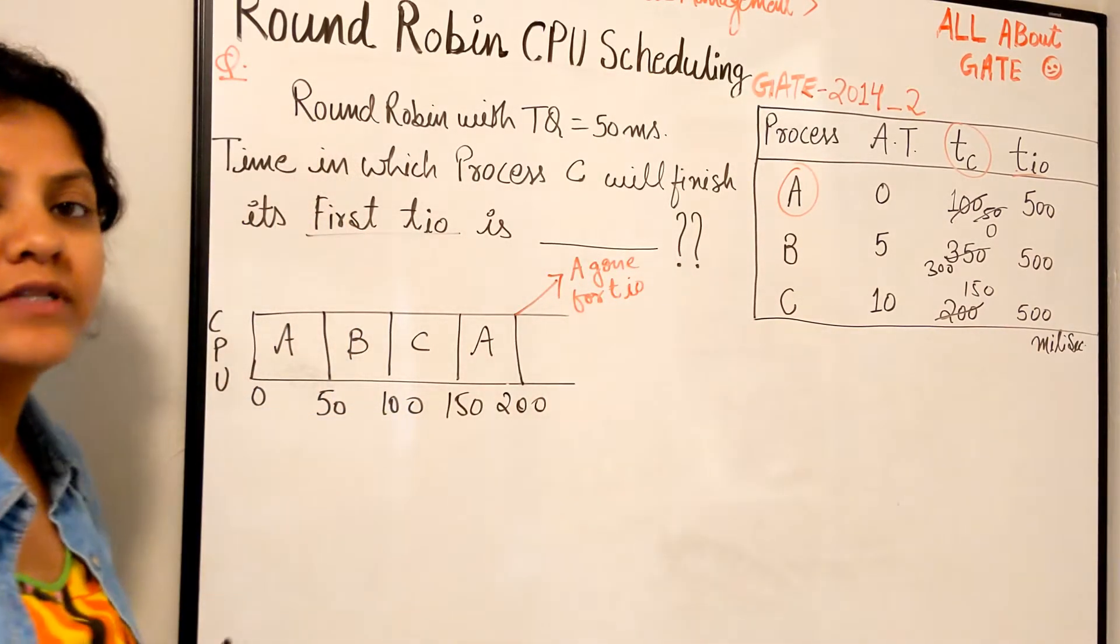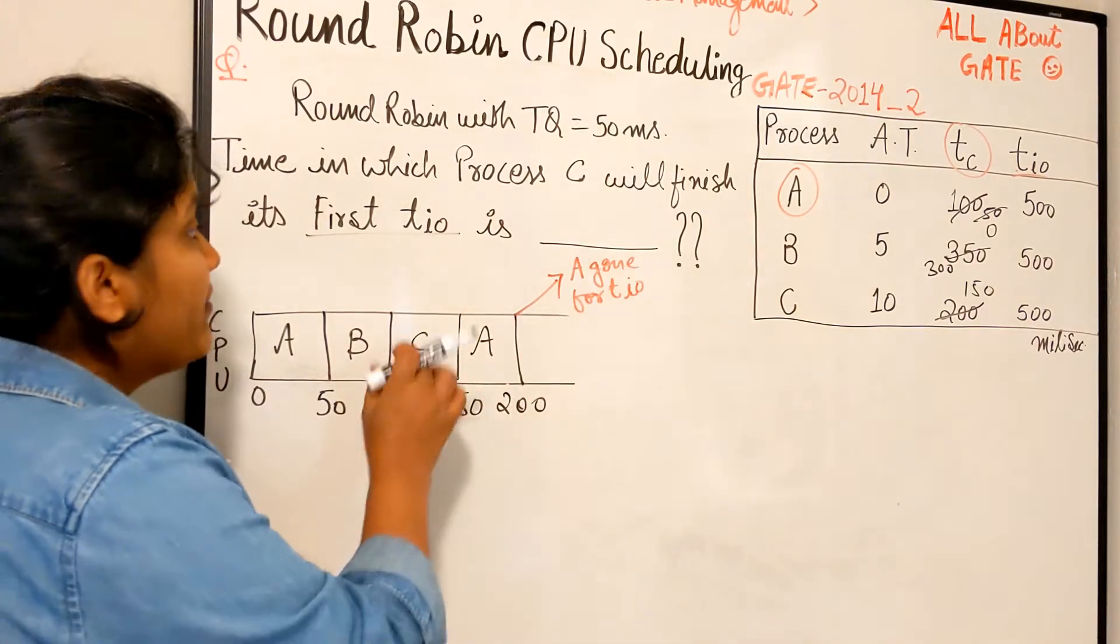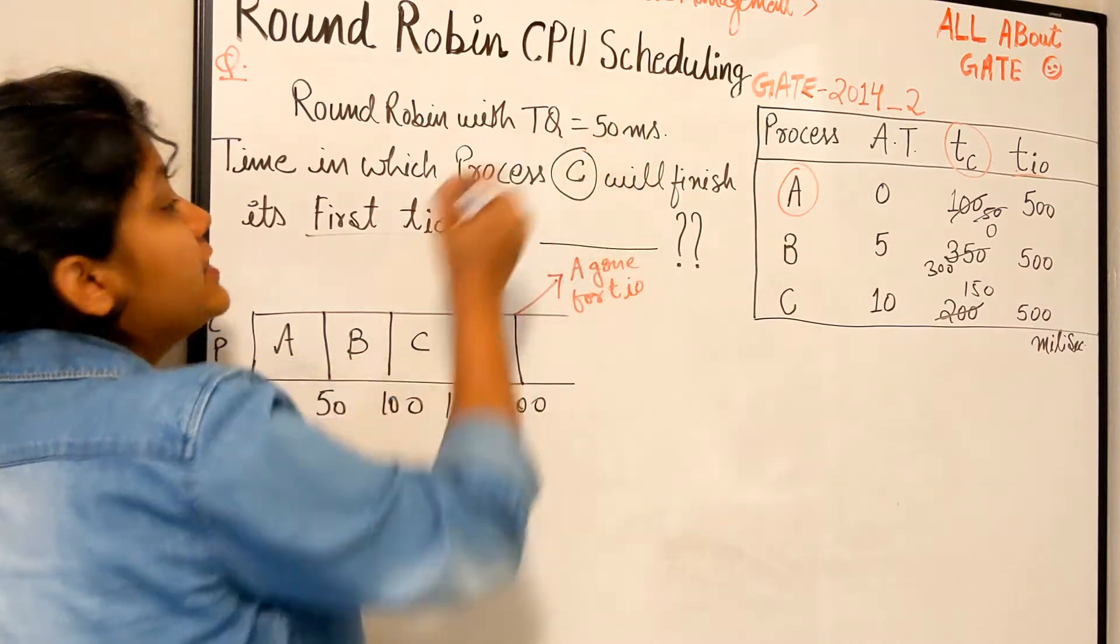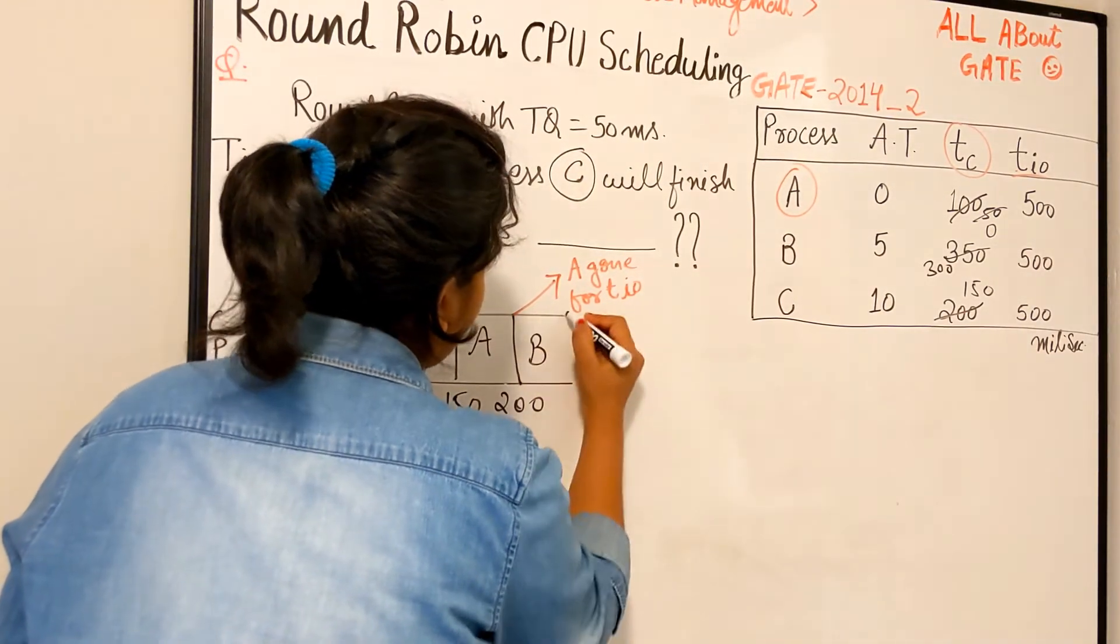It is allowed to go for the TIO, not before that, because it has finished its TC so now it can go. But we are to find out for process C, so let's continue. Again, process B comes in the queue, so B needs more.